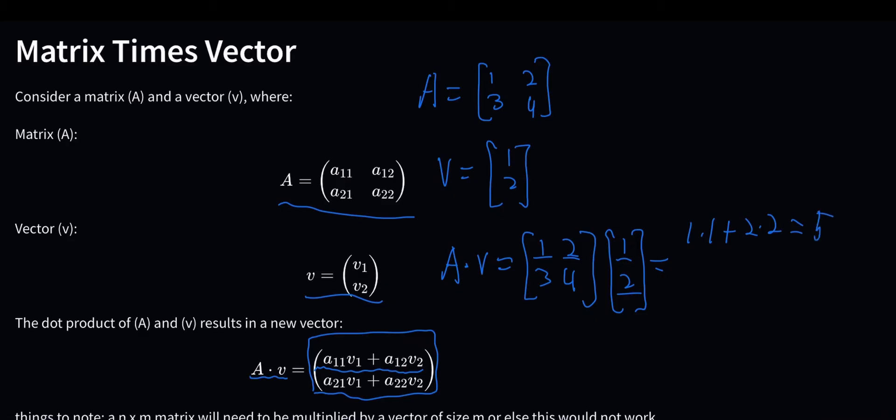And then if we do the same thing, we take 1 and 2 times 1 times 3, and 2 times 4, and add those up together, which is the second part on the bottom over here. So we take 3 times 1 plus 4 times 2, and that would equal 11.